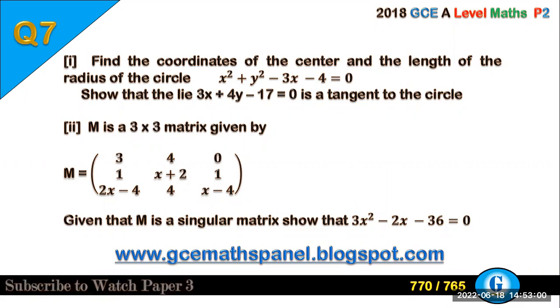This question reads: Find the coordinates of the center and the length of the radius of the circle x squared plus y squared minus 3x minus 4 equals 0, and show that the line 3x plus 4y minus 17 equals 0 is a tangent to the circle.